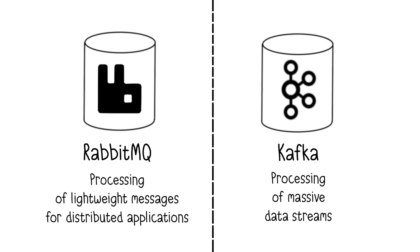Let's distinguish between Apache Kafka and RabbitMQ, as they are often confused. RabbitMQ is an excellent solution for lightweight message processing in distributed applications, while Apache Kafka is more suited for massive real-time data streams, handling up to millions of messages per second. There is also a dedicated video on Kafka worth checking out.